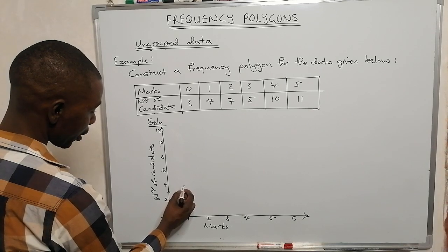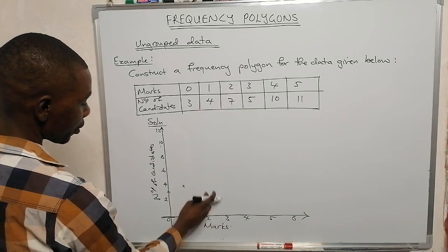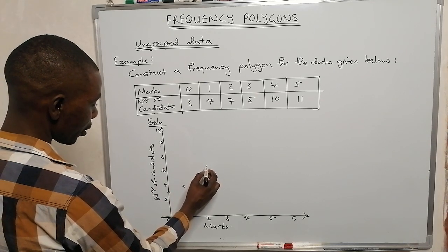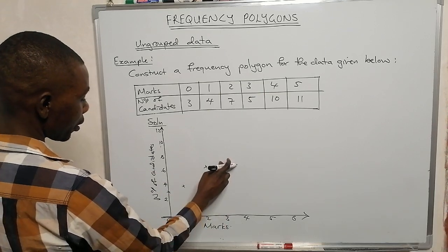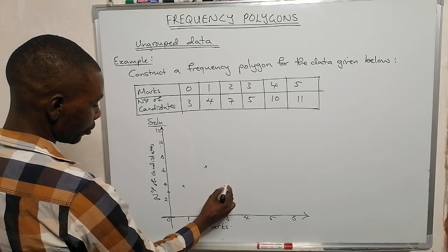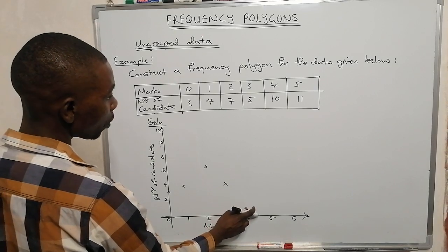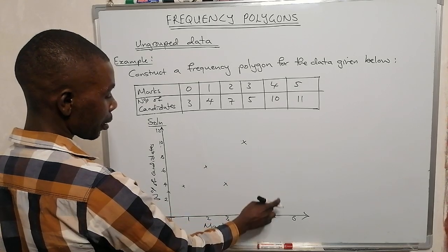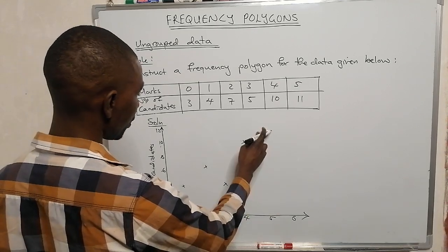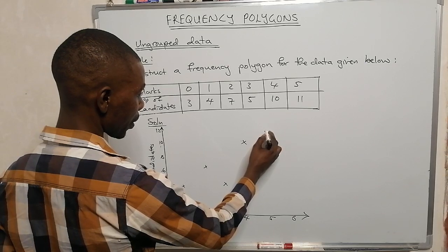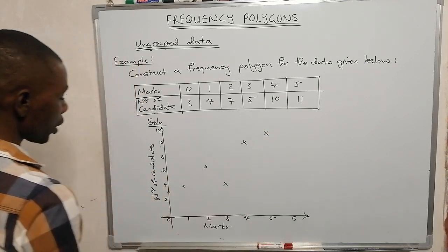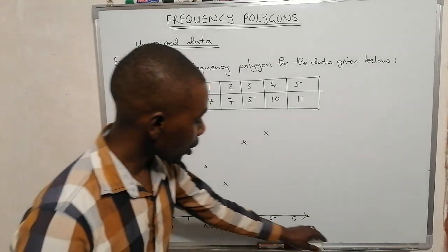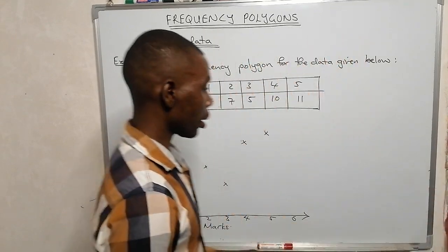Then (2, 7) — between 8 and 6 on the y-axis. Then (3, 5) — between 6 and 4. Then (4, 10) — at 10. Then (5, 11) — just above 10.